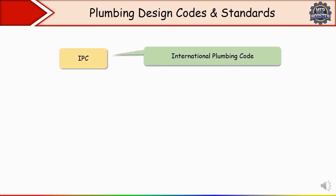The first one is IPC — International Plumbing Code. This International Plumbing Code is published by the International Code Council. It is used in the US, Middle East and other countries. Their purpose is to regulate plumbing system design, material, installation and inspection.